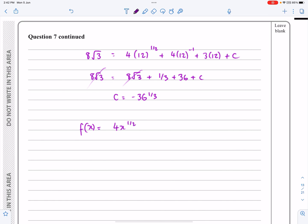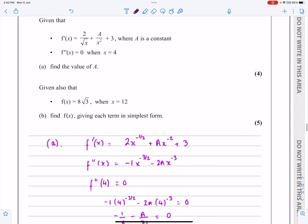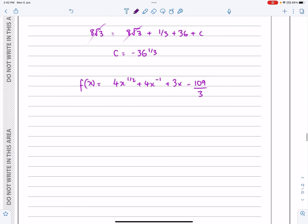So f(x) was 4x to the 1/2, it was 4x to the minus 1, it was 3x, and now this, I'm going to write it as an improper fraction, minus 109/3. But absolutely fine for you to leave it like that. Let's just check, what does it say, giving f(x), each term in its simplest form. That's fine, that is the answer.